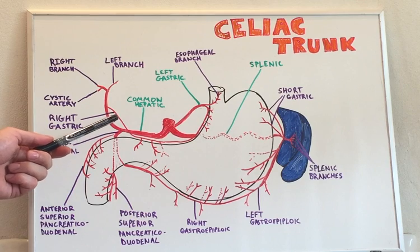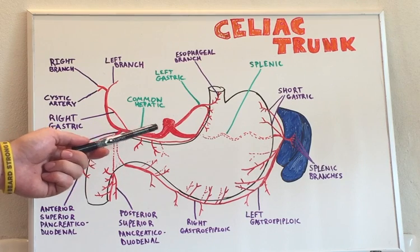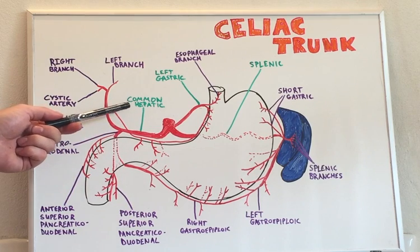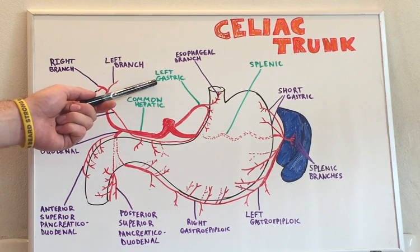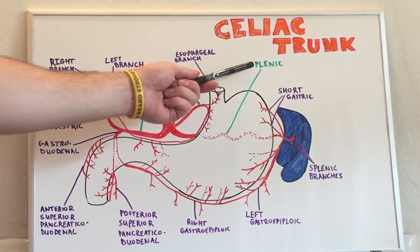The three main branches of the celiac trunk are shown in green here: the common hepatic, the left gastric, and the splenic.